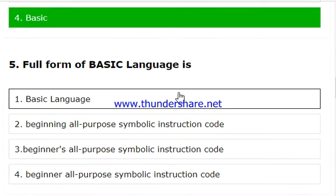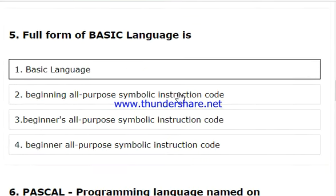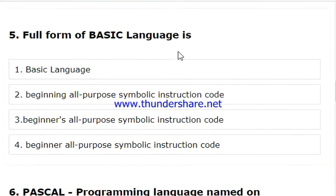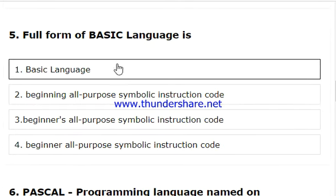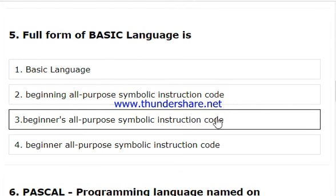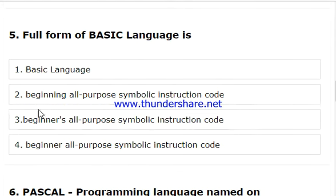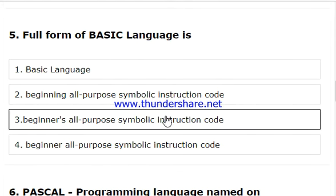What is the full form of the BASIC language? It is Beginner's All-Purpose Symbolic Instruction Code. This is the appropriate answer for BASIC language, so we should select the third option.